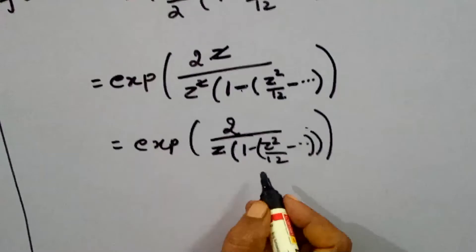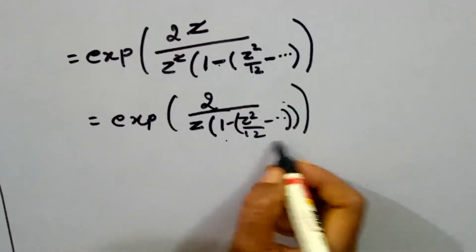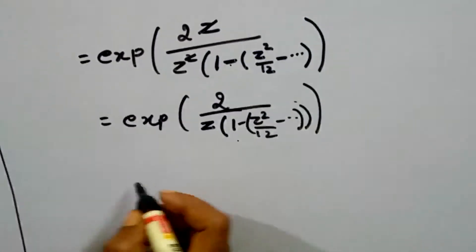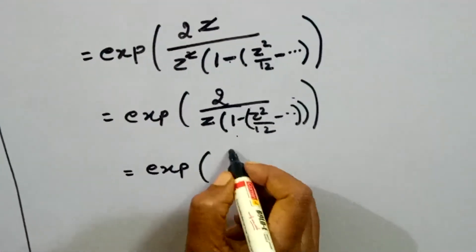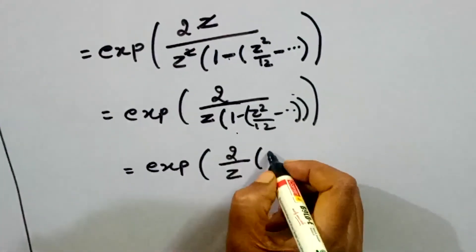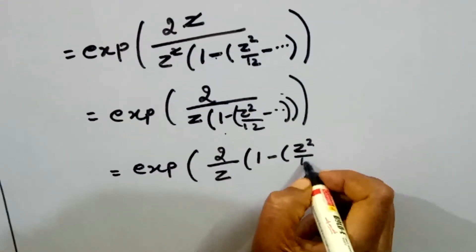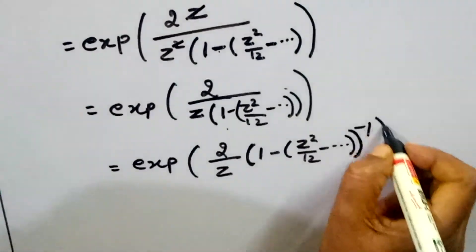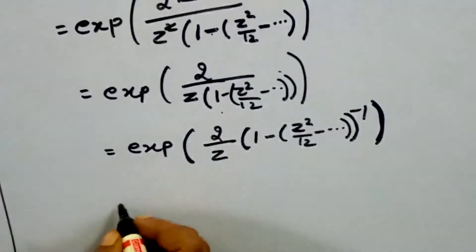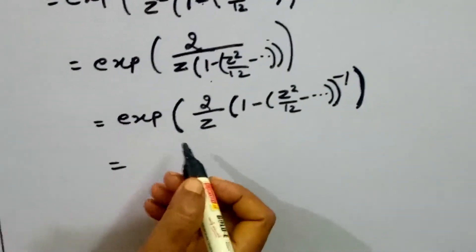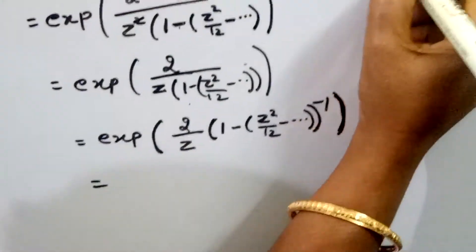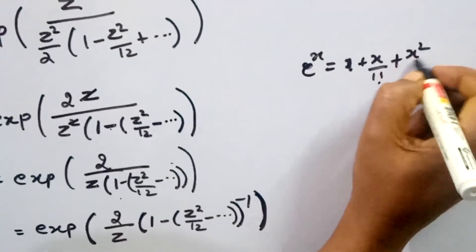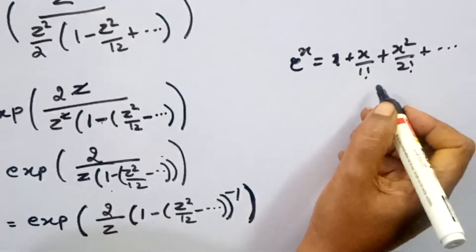Applying the expansion 1 over (1 minus x) equals 1 plus x plus x squared and so on, and also expanding e to the power x as 1 plus x over 1 factorial plus x squared over 2 factorial plus and so on, we multiply these series together to obtain the full Laurent series expansion for f of z around z equal to 0.